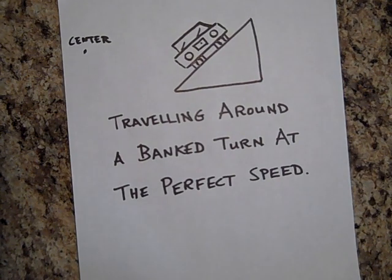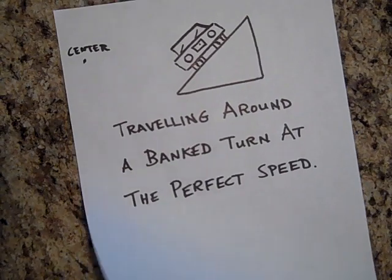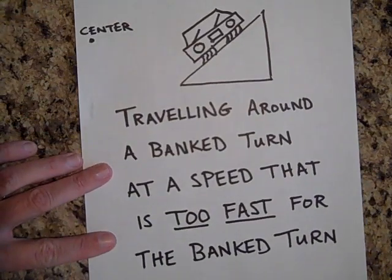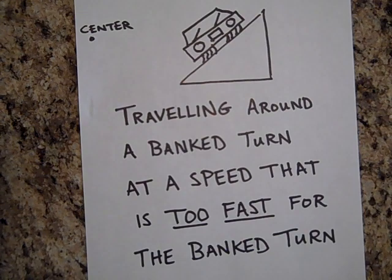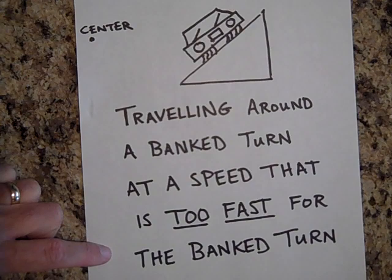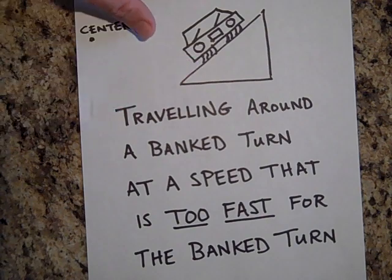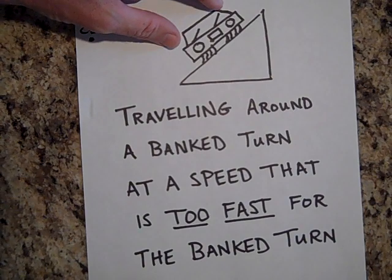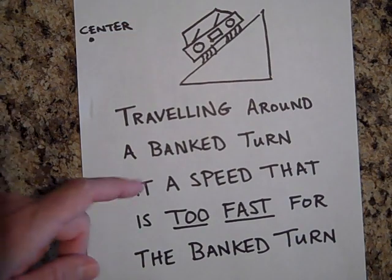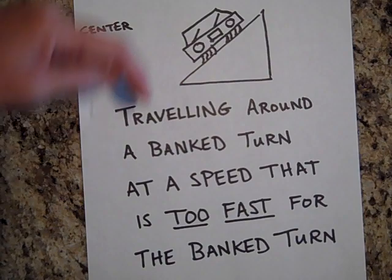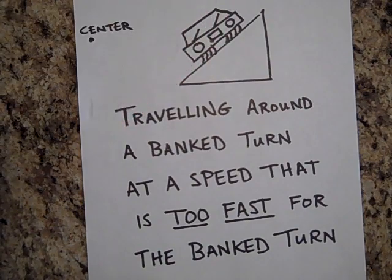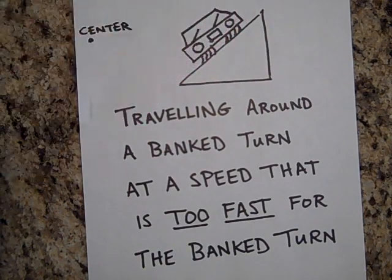What would happen if we were going around a little too fast on this banked turn? The tires would distort. This is a car traveling around a banked turn at a speed that's too fast — notice the tires are distorting because the car is trying to slide up and friction is keeping it from doing so. In this case, the frictional force is down the incline plane.